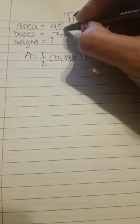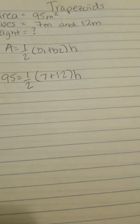So instead of an A, I'm going to put a 95 in its spot. I'm going to keep the one half. And in the place of base one, I'm going to put a seven. In the place of base two, I'm going to put a 12. And then I'm going to multiply it by the height. So 95 is one half of seven plus 12, which is 19 times the height.